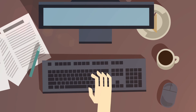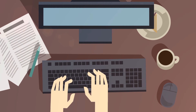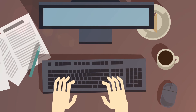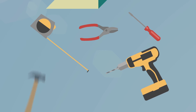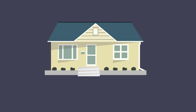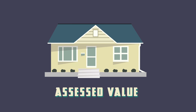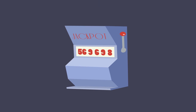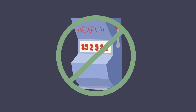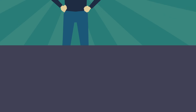Assessors maintain a thorough database of real estate information to make this process as precise as possible. Changes in value are typically the result of local real estate market sales or major changes to a property. Remodel a kitchen or finish your basement and your property's value could increase. When you see your home's assessed value, you can rest assured that the number has not been drawn out of a hat, nor generated with anything but equity and accuracy in mind.